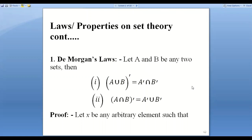Let A and B be any two sets. Then, as I told you in my previous video about the definition of the complement of a set, the symbol dash represents the complement. De Morgan's first law states: (A union B)' is equal to A' intersection B'. If you have two sets A and B, the complement of their union equals the intersection of their complements.